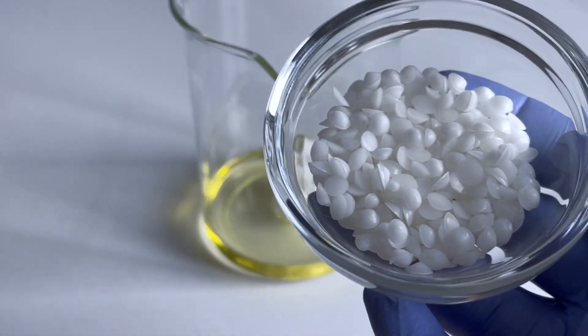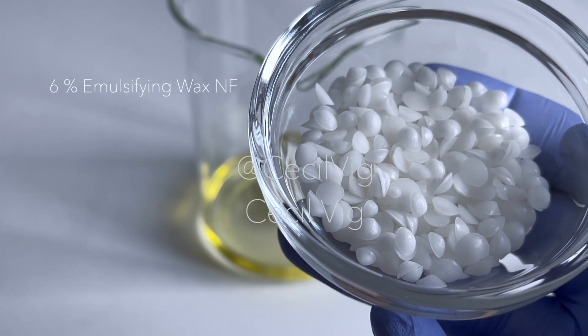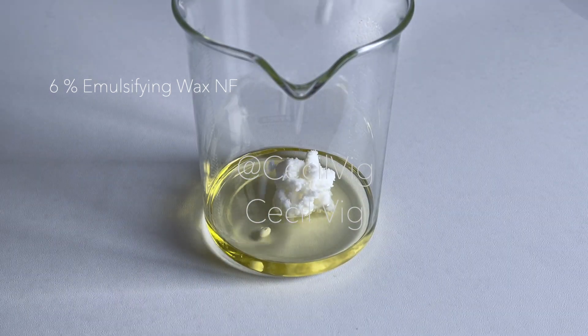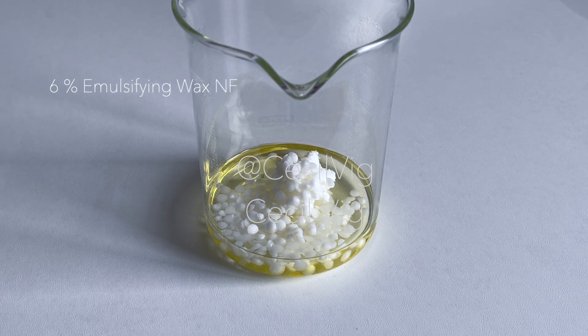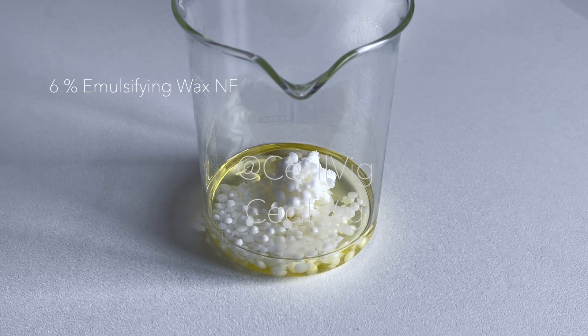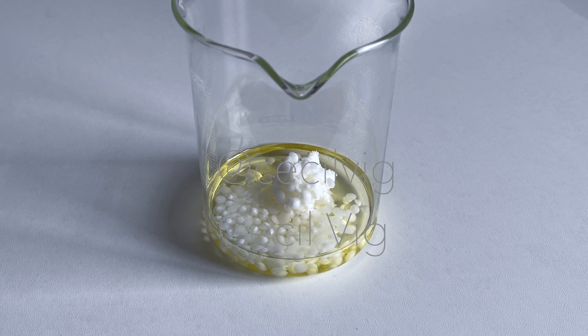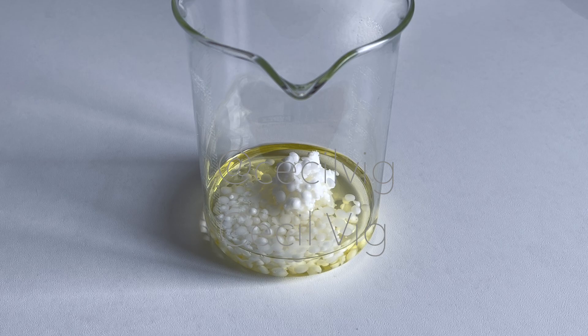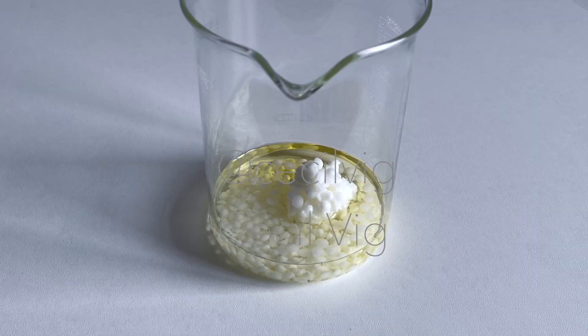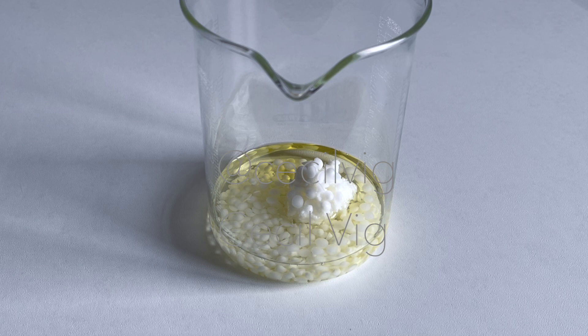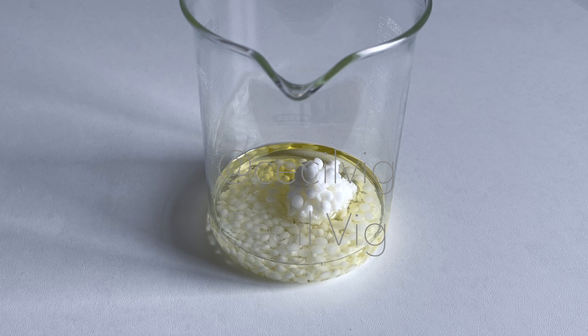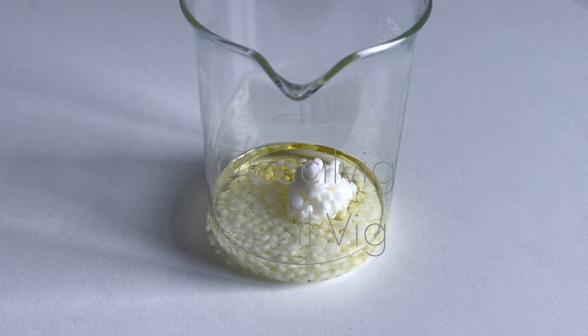The next ingredient I add is the emulsifying wax NF. Emulsifying wax NF is a blend of ingredients including cetearyl alcohol, polysorbate 60, and PEG 150 stearate. Commonly used in skincare and cosmetic products to stabilize oil and water-based formulations and ensure they blend perfectly. The cetearyl alcohol in the blend acts as a thickener, giving lotions and creams a smooth texture. The polysorbate 60 and PEG 150 stearate help to form an emulsion, distributing oil molecules evenly throughout the water-based ingredients. A combination of all these ingredients gives emulsifying wax NF its key emulsifying and stabilizing properties.